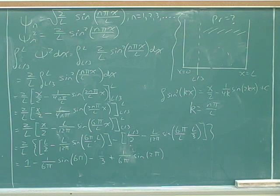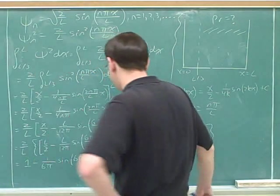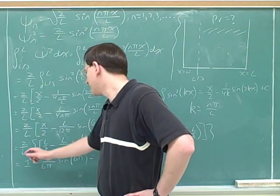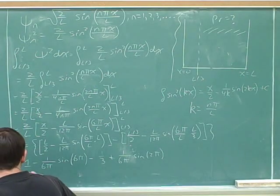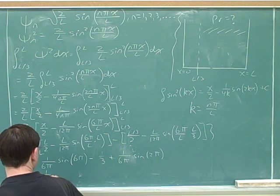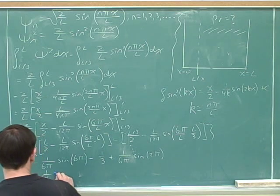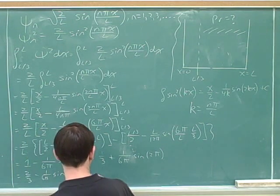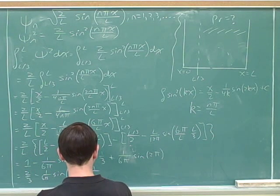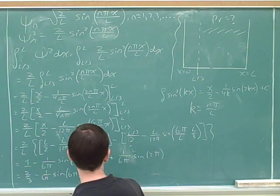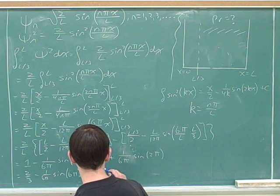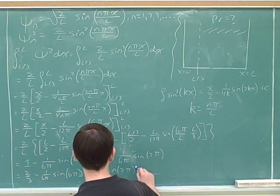And this is 2π, because 6π over 3 is 2π. The only thing that gave you trouble was canceling all the Ls — this was complicated algebra. Here we have an L on the bottom, and all the other terms have Ls on the top, so all the Ls cancel. And then you got 2 thirds minus 1 over 6π times sine(6π) plus 1 over 6π times sine(2π).